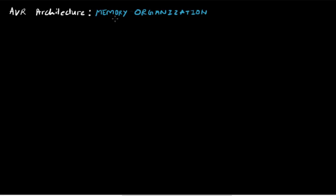AVR memory can be divided into two parts: one is the memory to store code and the other is the memory to store data. A controller or processor architecture where code and data are stored separately is called the RISC architecture — Reduced Instruction Set Computer — where you have a separate memory for code and a separate memory for data.